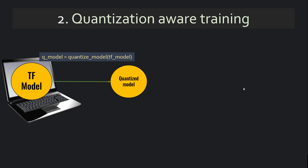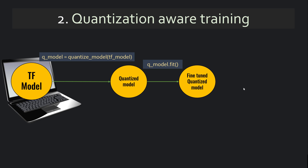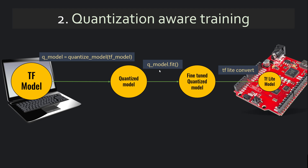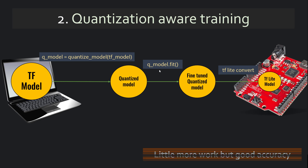The better approach is quantization-aware training. In this case, you take your TF model, apply the quantize_model function on it, and get a quantized model. Then you do training again — this is more like transfer learning, fine-tuning. You take your model, apply quantization, and fine-tune it by running training again for fewer epochs to get a fine-tuned quantized model. Then you convert it again using TFLite. This approach is a little more work but gives you better accuracy.